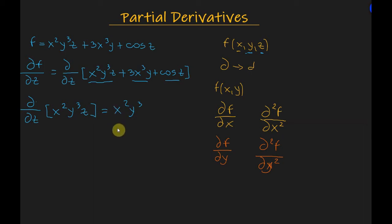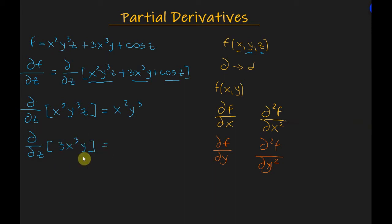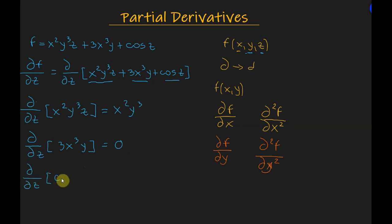The partial derivative with respect to z of the second term, 3x cubed y: we see there is no z variable here, which means we have the derivative of a constant, and the derivative of a constant is simply zero. For the last term, the partial derivative with respect to z of cosine z: the derivative of cosine z is minus sine z.